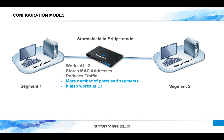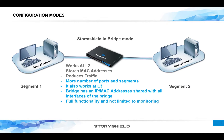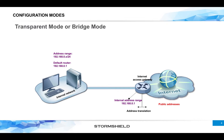The StormShield bridge also works at Layer 3, meaning it has an IP address shared amongst all interfaces of the bridge. All interfaces share the same IP and the same MAC address. When in bridge mode, StormShield retains full functionality — unlike some firewalls that simply become a monitoring device in transparent mode. StormShield keeps functioning normally as a security device, needing to understand all network traffic flows, where traffic is coming from, and which interface it should exit on.